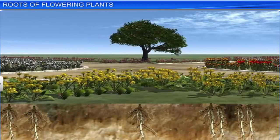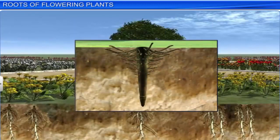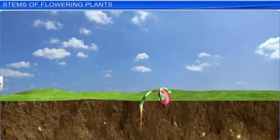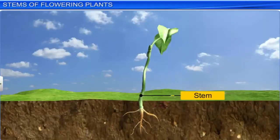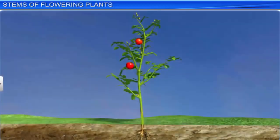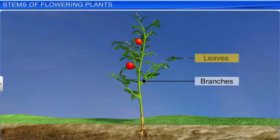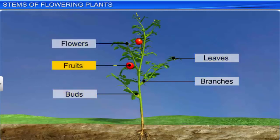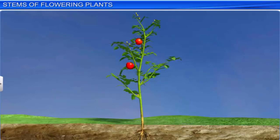Therefore, the root system forms an important part of a flowering plant. A stem is a plant organ that develops from the plumule of a germinating seed. It is the main axis or stalk of a plant, usually green in color when young and slowly turns brown. The stem bears branches, leaves, buds, flowers and fruits. The buds growing on the stem can be either axillary or terminal.